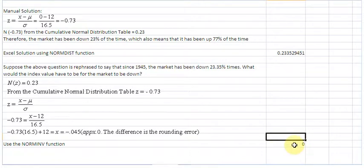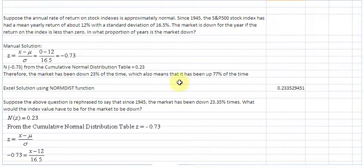And you see that the value 0 has been returned. So the index value has to be 0 for the market to be down. This is the same thing that we saw in this question here. That is all I want to cover in this video. See you next time.